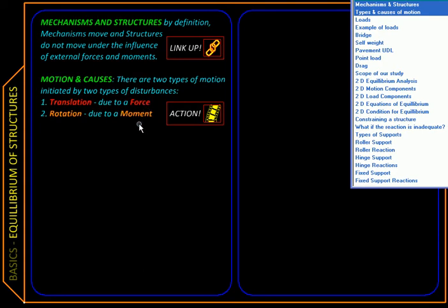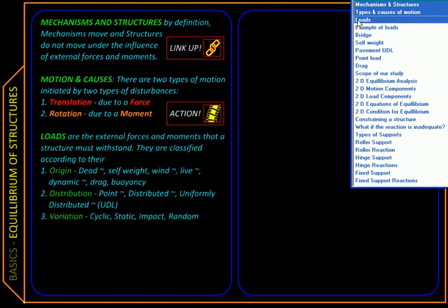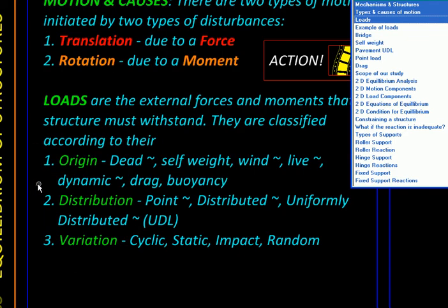So these forces and moments are often called as loads. They are coming from outside of the structure. So they are external forces or external moments. And they are called as loads. Now loads come in all kinds of different categories or varieties. So depending on their origin, we may classify them as dead load, load because of the self weight. Wind load, due to winds or flows of some kind. Live loads, loads because of things that are moving. Dynamic loads, loads because of things that are accelerating. Drag loads because of a flow that is going past a structure or a body. Buoyancy force, force because the body is immersed into some fluid.